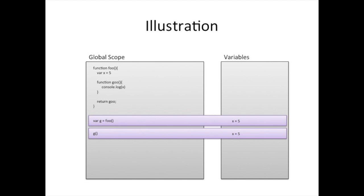Now I can call g — that is, call the function goo using the reference g — and I should expect it to print out the value of x. But here's the thing: x was declared in the scope introduced by foo. Once foo returns, that variable x should be destroyed, so calling goo later should result in x being gone. But that's not what happens — it actually prints out the value, and this is what I mean by closure. Goo closes over the variable x, somehow encapsulating and remembering it.